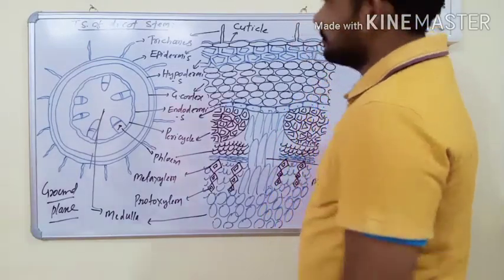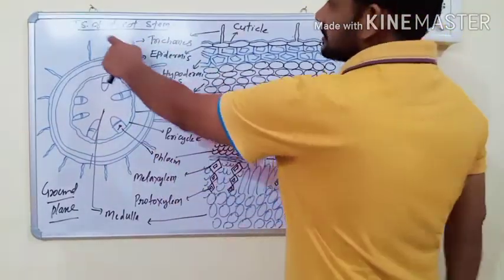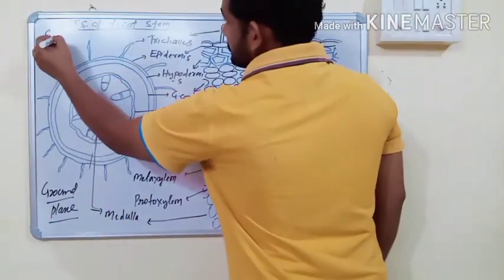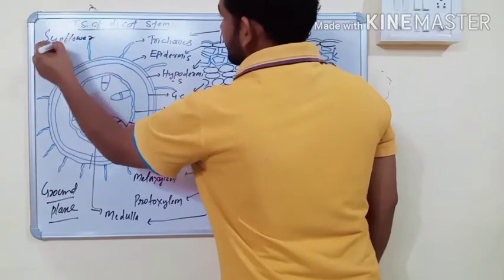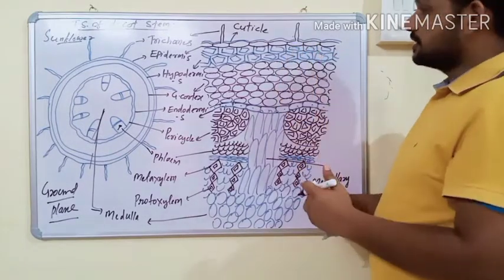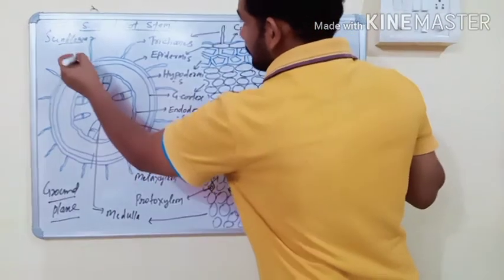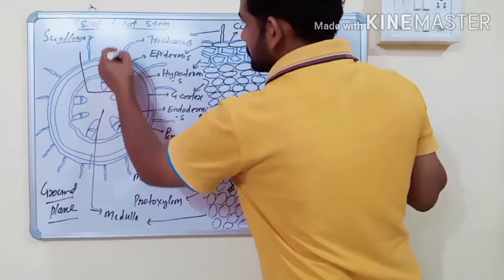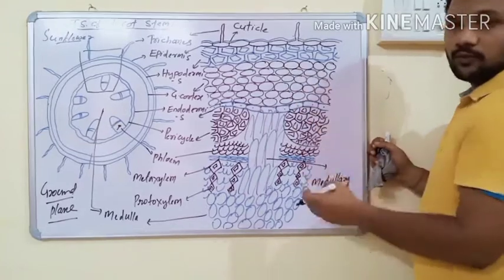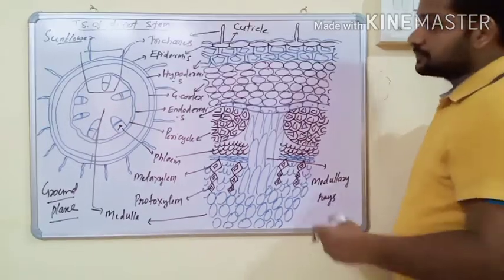Good morning students. Now we will discuss the anatomy of another organ — the transverse section of dicot stem. For best study, we use the transverse section of the stem of sunflower. The transverse section of dicot stem has various tissues one above the other, arranged concentrically.